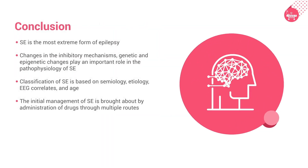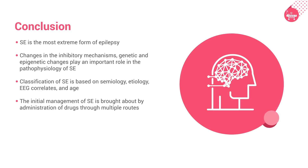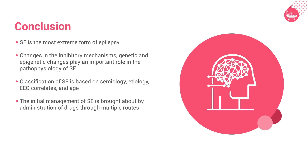In conclusion, SE is the most extreme form of epilepsy. Changes in inhibitory mechanisms, and genetic and epigenetic changes, play an important role in the pathophysiology of SE. Classification of SE is based on semiology, etiology, EEG correlates, and age. Convulsive SE is the more common type, generally occurring when a person has prolonged or repeated tonic-clonic seizures. The initial management of SE is brought about by administration of drugs through multiple routes.